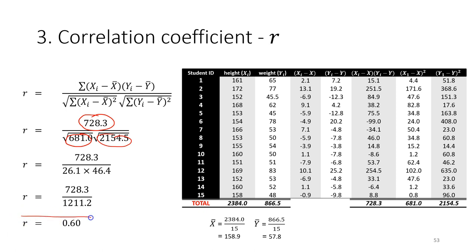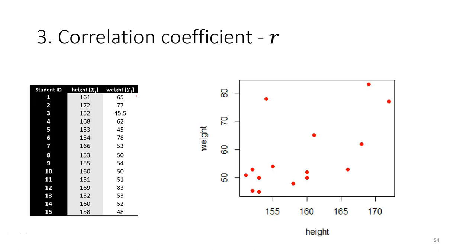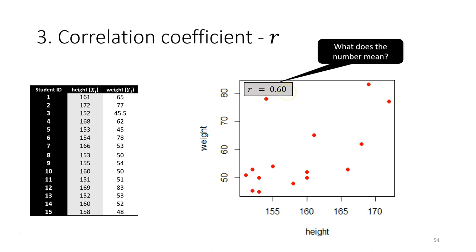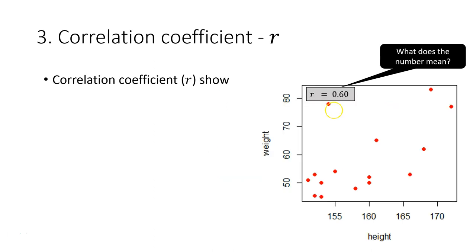We will get an r value which is the correlation coefficient. The magnitude of the correlation coefficient is no longer dependent on the scale or unit of measurement after dividing by the standard deviation. This is how we usually report it — on a graph, the r value is displayed. We will now discuss in detail what this number means.